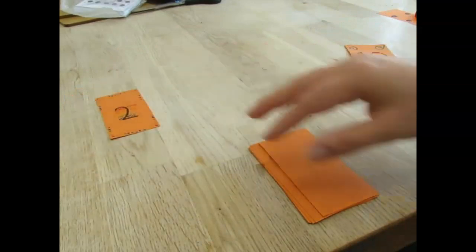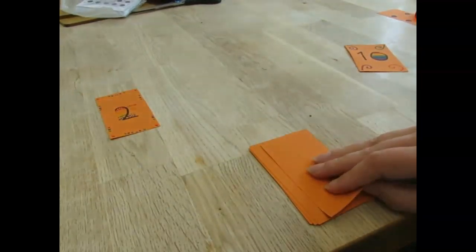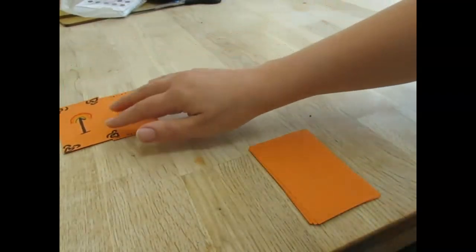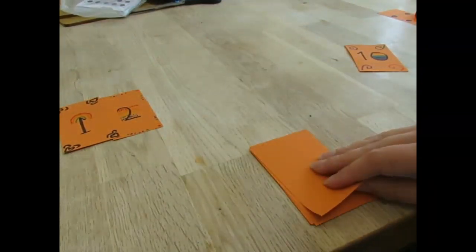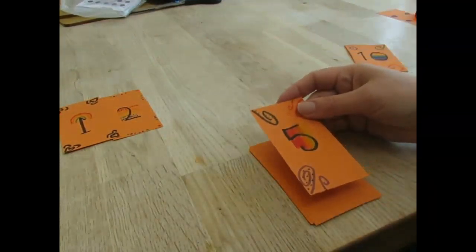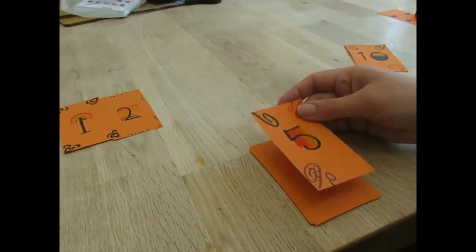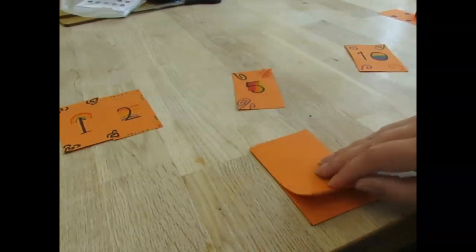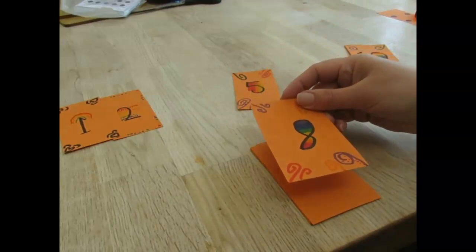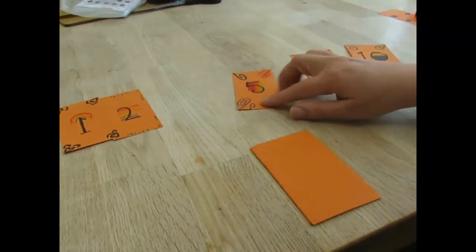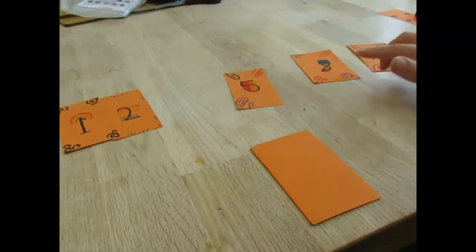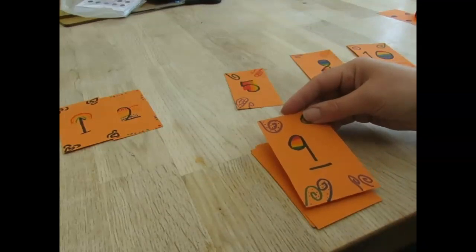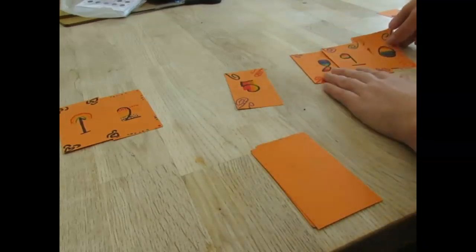While you're choosing the cards get the children to explain where they think the card should go and why. I've got a one so I know that one is one less than two so I think it goes next to my two. I've got a five. I know that five is halfway along my numbers from zero to ten so I'm going to put it in the middle. I've now got an eight. I know eight is between five and ten but I know it's not next to them so I'm going to put it there. I've got nine. I know nine does go between eight and ten so I'm going to put my nine there.